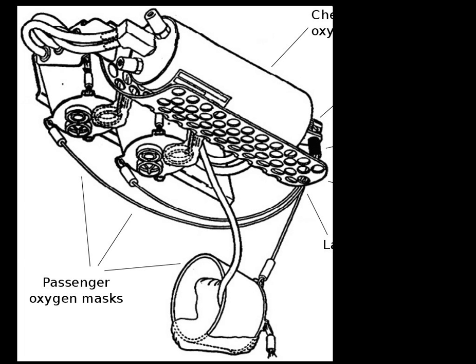Oxygen candles: A chlorate candle, or an oxygen candle, is a cylindrical chemical oxygen generator that contains a mix of sodium chlorate and iron powder, which when ignited smoulders at about 600 degrees Celsius.